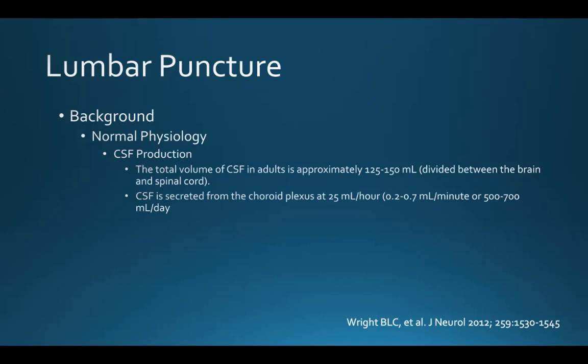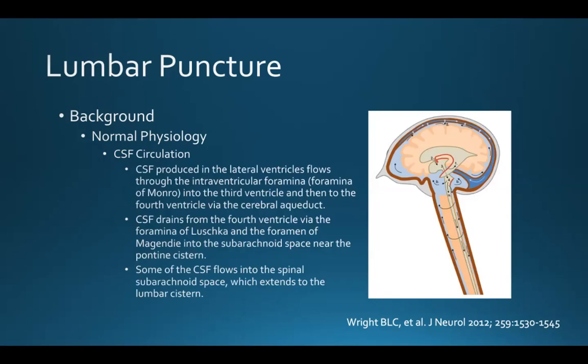The total volume of CSF in adults is approximately 125 to 150 milliliters, divided between the brain and the spinal cord. CSF is secreted from the choroid plexus at a rate of 25 cc per hour — you can also think of it as 0.2 to 0.7 cc per minute or 500 to 700 cc per day.